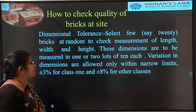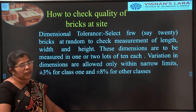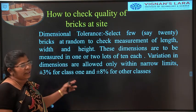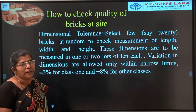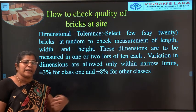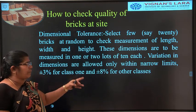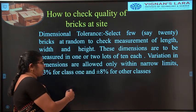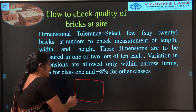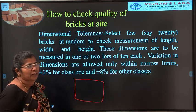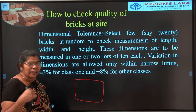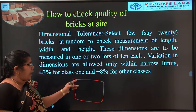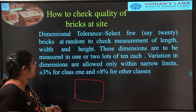For dimensional tolerance, bricks taken randomly from a batch should have the same dimensions. Ten bricks may be checked, or 100 bricks from a larger batch. A tolerance of plus or minus 3% is allowed. For Class A bricks — with compressive strength of 7 N/mm² and above — only plus or minus 3% moisture absorption is permitted, while for other classes, plus or minus 8% is allowed.